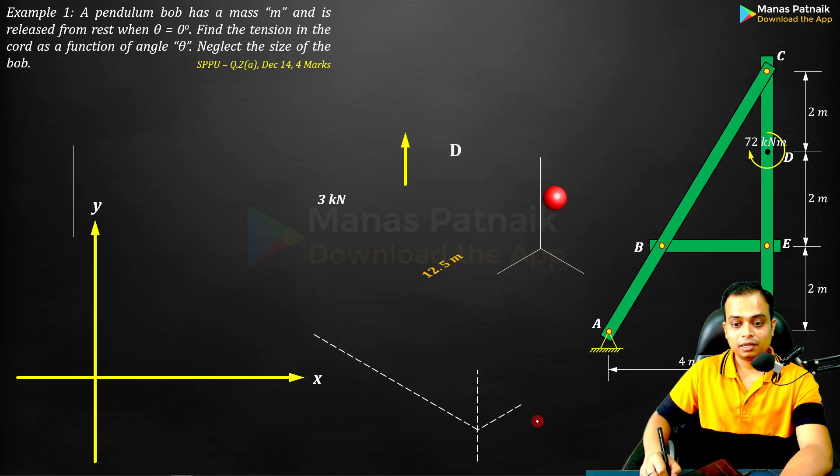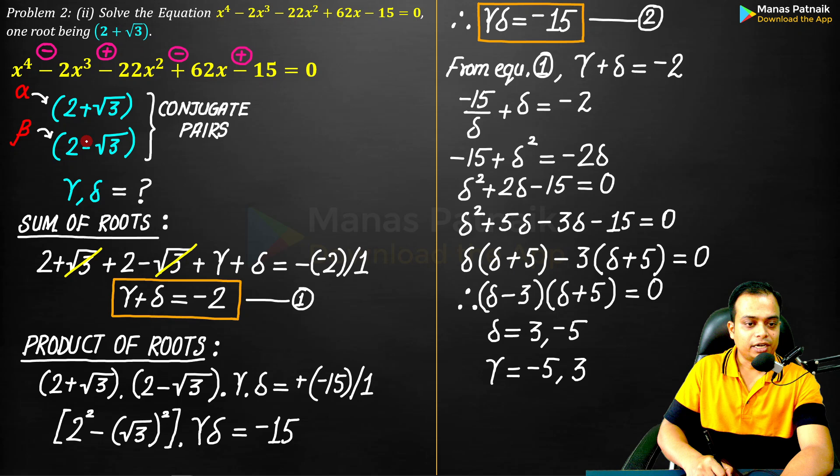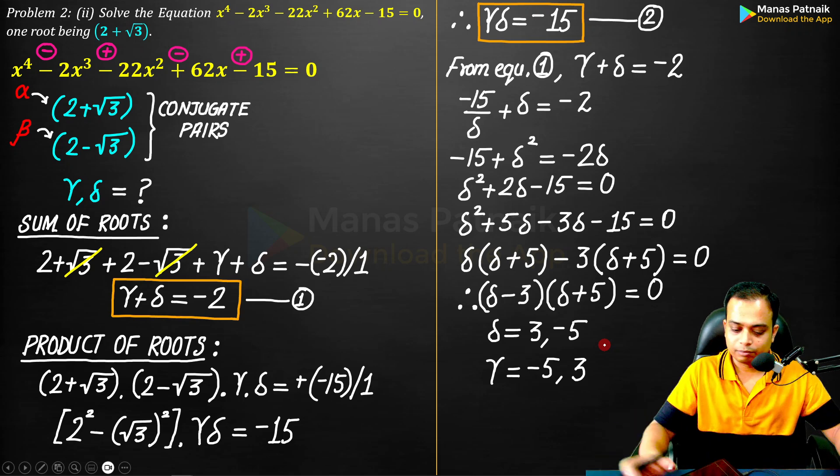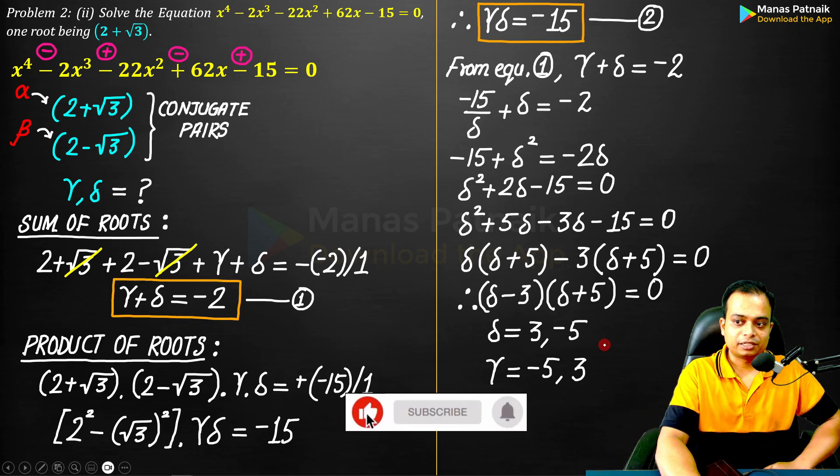So the final roots are 2 + √3, 2 - √3, and 3, -5. Or you can also say 2 + √3, 2 - √3, and -5, 3. Whichever way you look at it, it is one and the same. Thank you very much.